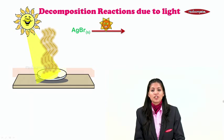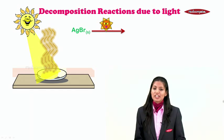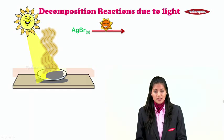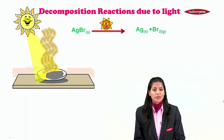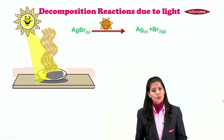There is formation of vapor along with change of color from yellow to grey, formation of grey colored substance. Now what is that grey colored substance? It is nothing but silver, that is Ag, and the vapors formed are of bromine.